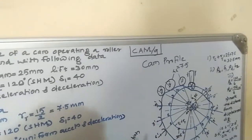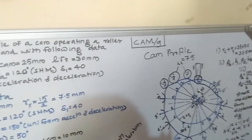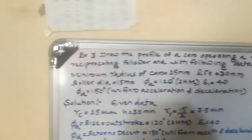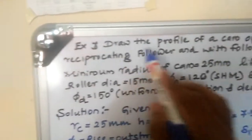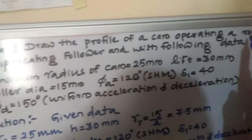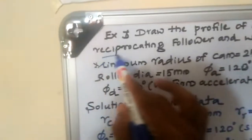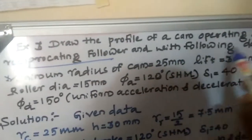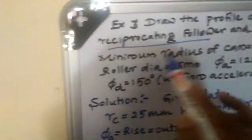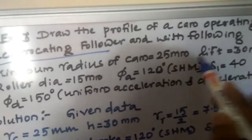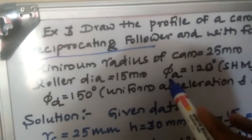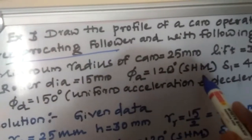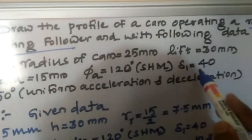This is the ninth video on the cam. Today I will go for the third example. I will dictate the problem. Draw the profile of a cam operating a roller reciprocating follower with the following data: minimum radius of the cam is 25 mm, lift is 30 mm, roller diameter is 15 mm, ascending of the follower is 120 degrees with SHM, simple harmonic motion.